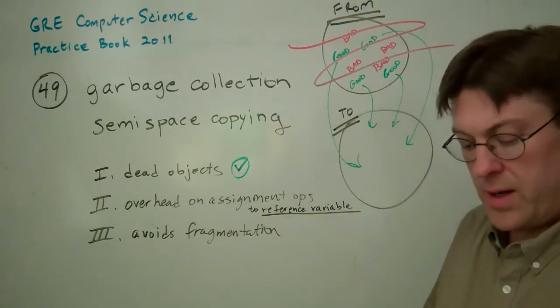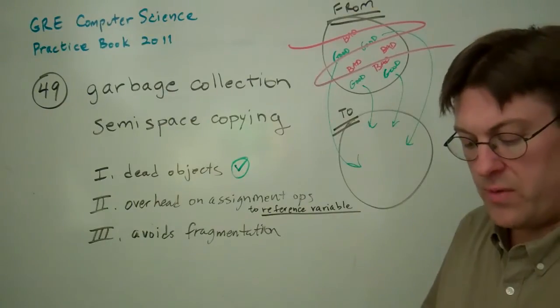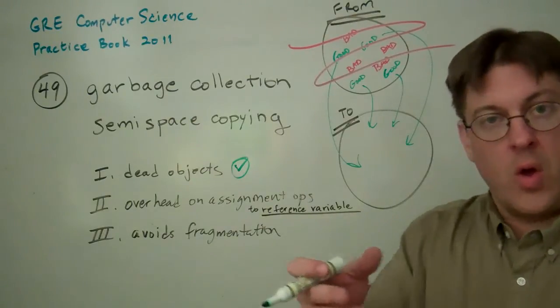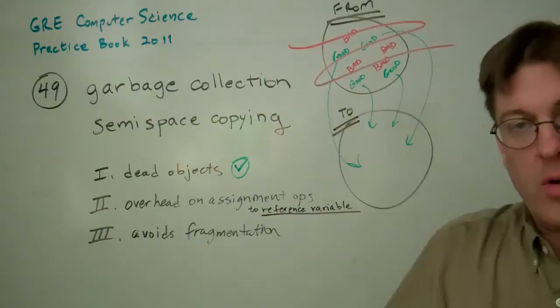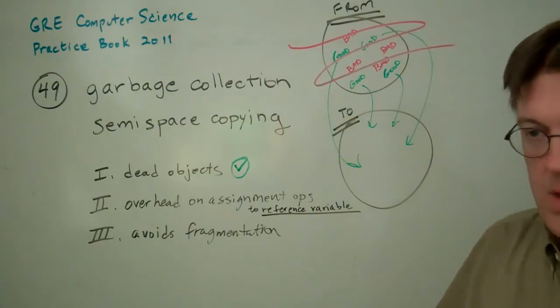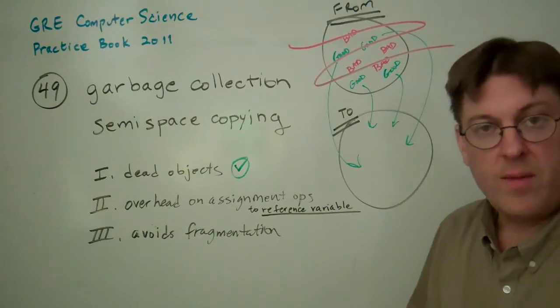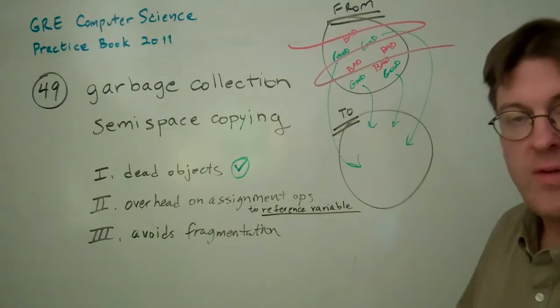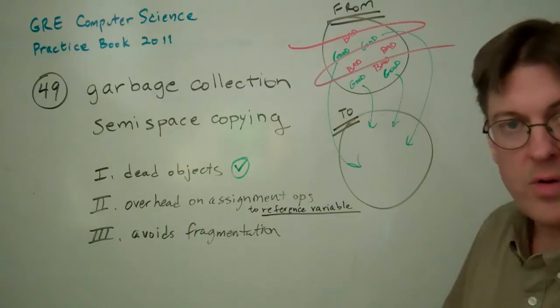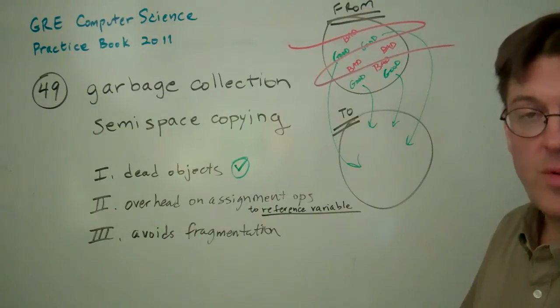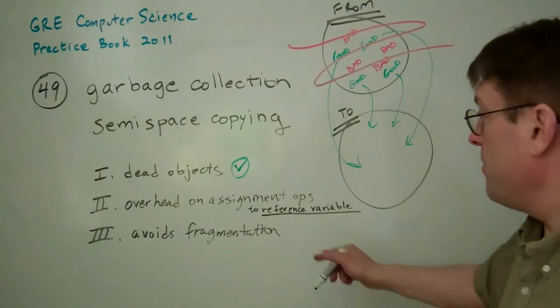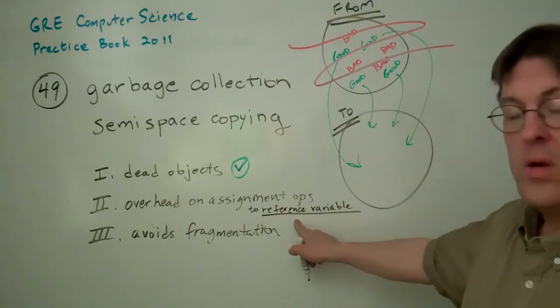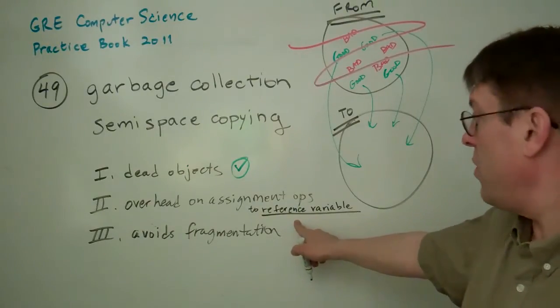Two, incurs overhead on every assignment operation to a reference variable. What's a reference variable? A reference variable is basically another name, a second name for the same variable. So when you pass by reference, you just have another name for the same variable that you were talking about before.